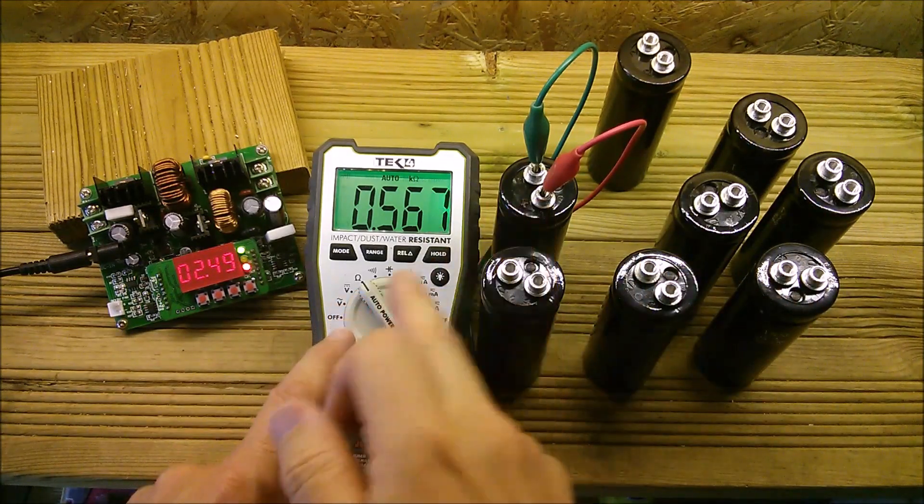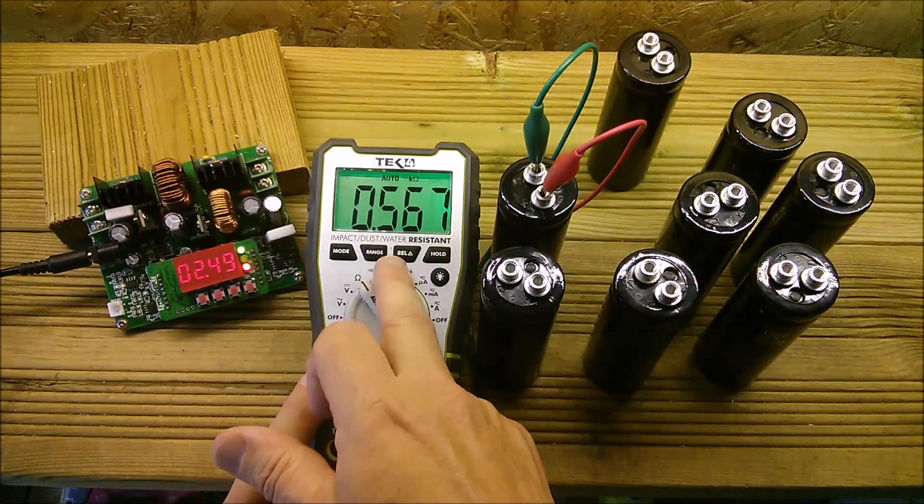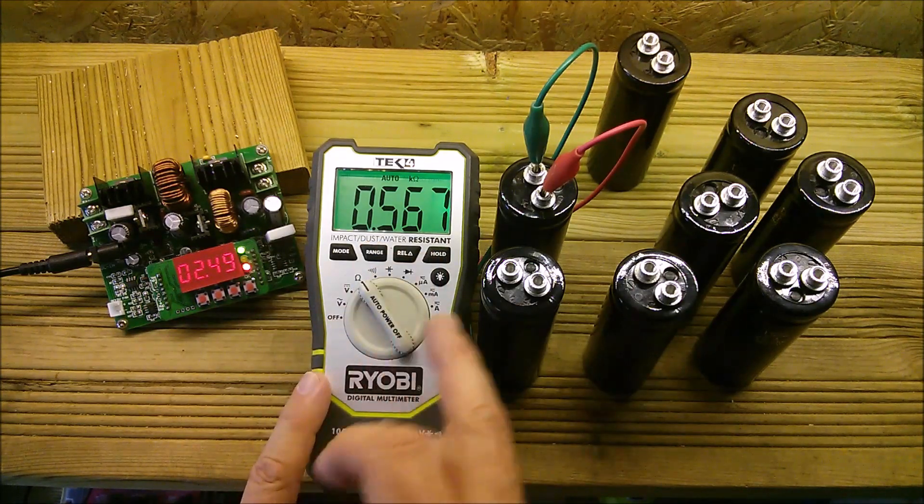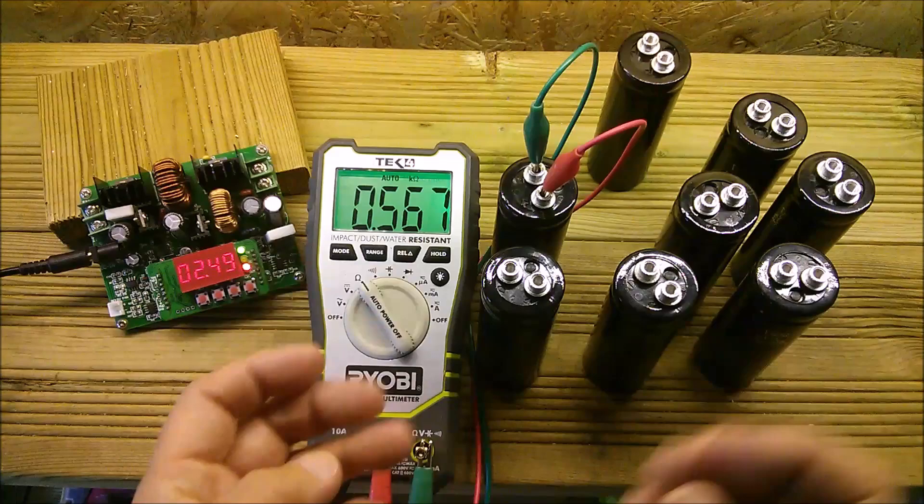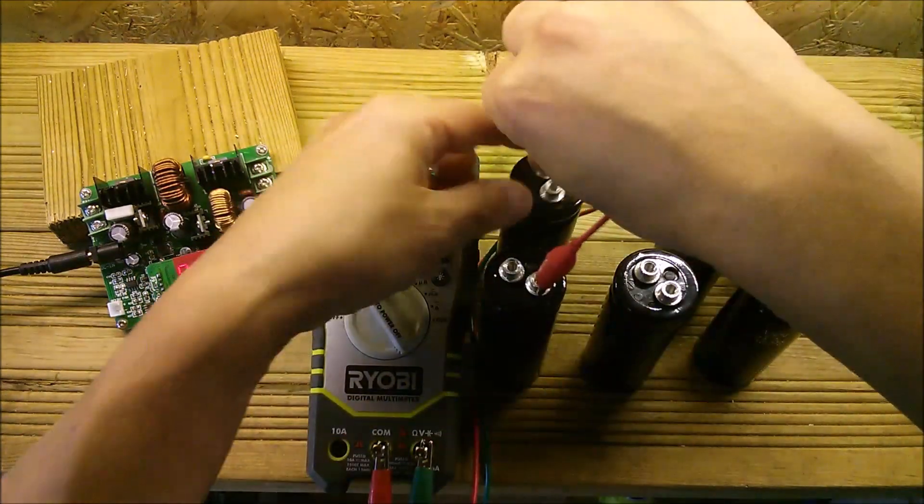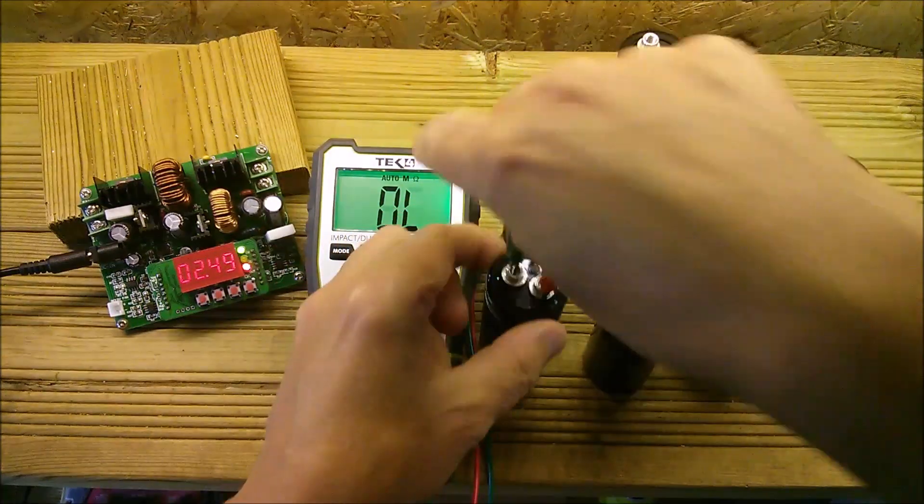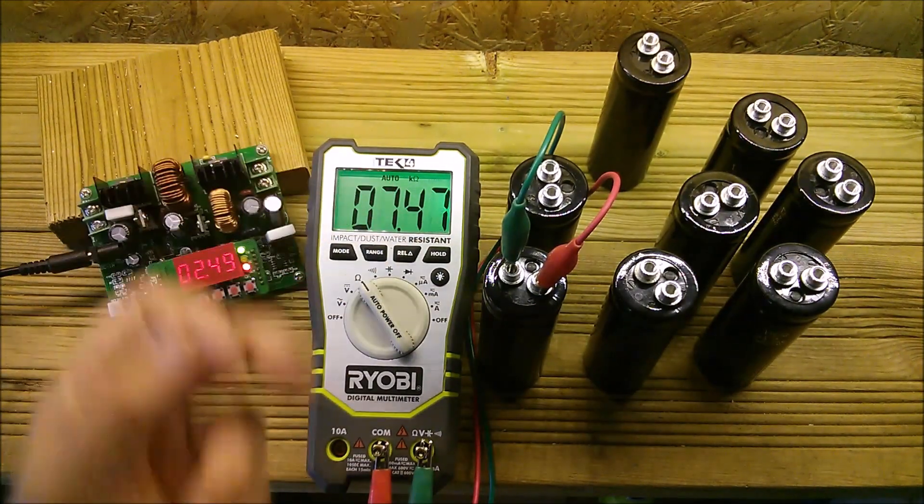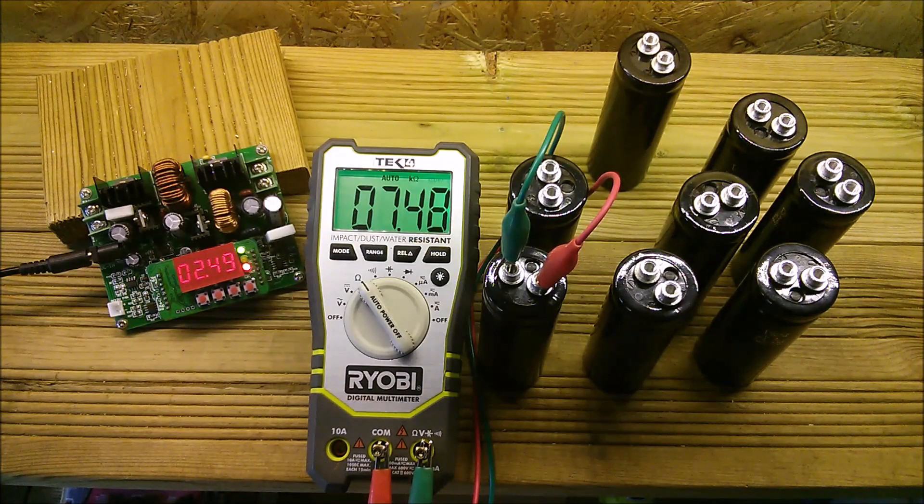Some of them show a bit of resistance. This one's showing half a k, so about 500 ohms, 567 ohms to be precise. But others show pretty much an open circuit. Like this one is showing 7k ohms.